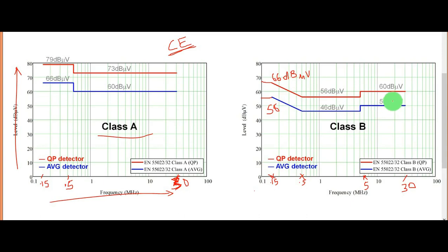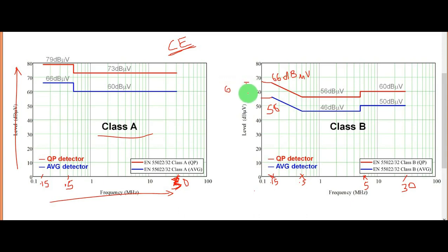So that covers the average limit and quasi-peak limit. I hope you understood a bit more about conducted emission — the frequency range and the passing criteria. Usually we follow the practice that our product's internal requirement should comply at least 6 dB below the quasi-peak limit. For example, where the limit is 66 dB, your 6 dB below margin would be 60 dB — so you must meet 60 dB at 150 kilohertz, not 66 dB.